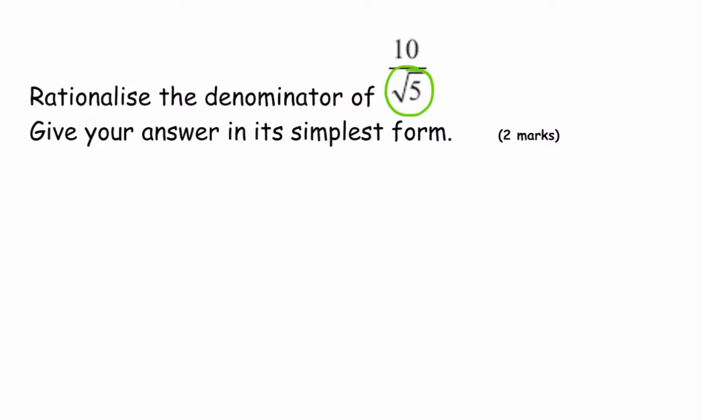Okay, so let's go ahead and write the question first: 10 over root 5. When rationalizing the denominator, if you multiply the root 5 by itself, which is root 5, that will leave us with just 5. And according to the equivalent fraction rules, you need to multiply the numerator by the same number as well.